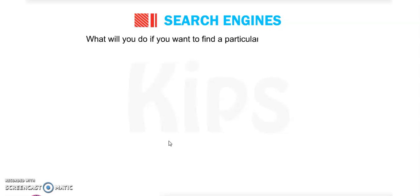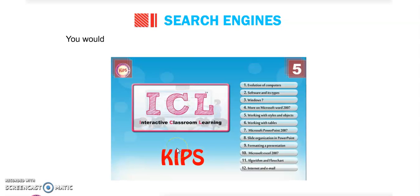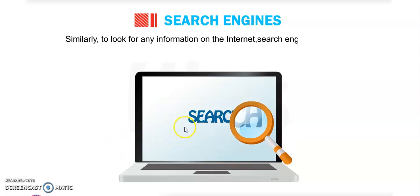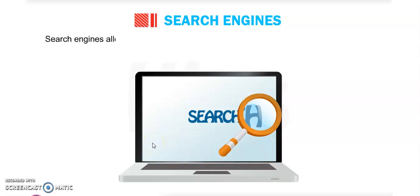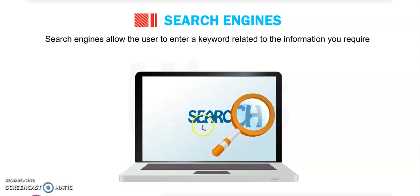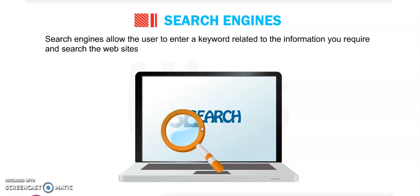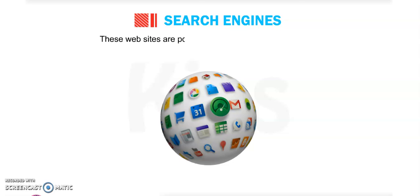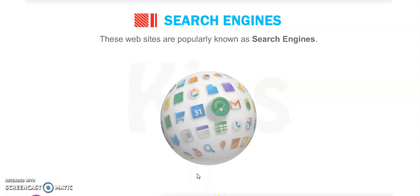Next, what are search engines? If you want to find a particular chapter in a book, you look at the index, find out the page number, and then open that page. Similarly, to look for any information on the internet, search engines are used. Search engines allow the user to enter a keyword related to the information required and search websites containing that particular information. These websites are popularly known as search engines.